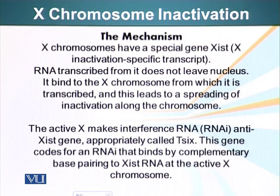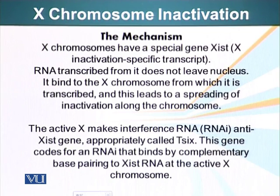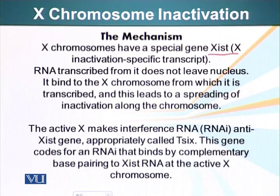Additionally, I would like to mention how X chromosomes are inactivated. Females have two X chromosomes — one from the father and one from the mother. One of these X chromosomes is inactivated. When this process occurs at random, the chromosome that is going to become inactive starts making a special RNA called XIST, which stands for X-inactivation specific transcript. This RNA does not even leave the nucleus. It starts to bind the X chromosome from which it was transcribed, and this leads to spreading of inactivation along the X chromosome.